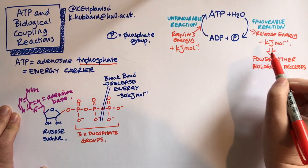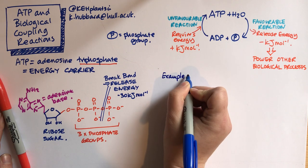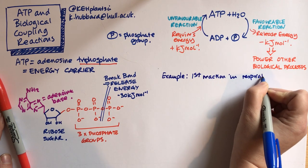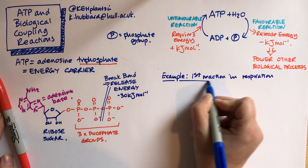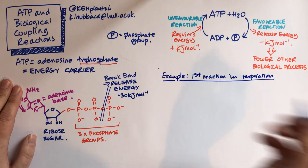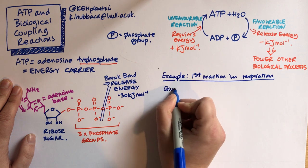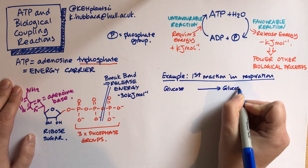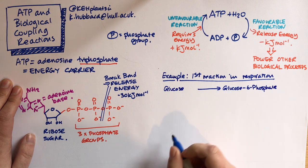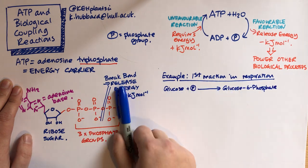So we can power other biological processes using the energy released from ATP. Because it releases quite a lot of energy, we can use that to do biological work. So the classic example of this is the first reaction in respiration. Respiration is taking glucose and oxidizing it to ultimately release energy that we can use in cellular reactions. The first reaction in respiration is going from glucose to glucose 6-phosphate. So a phosphate group needs to be added to the glucose as the first reaction.